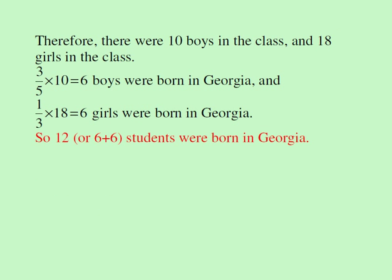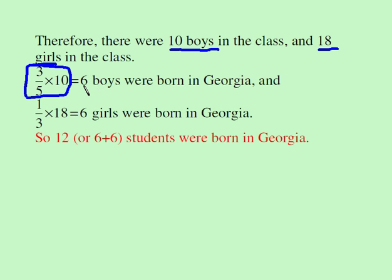The question wants us to find the total number of boys and girls born in Georgia. Since b is ten, there are ten boys in the class, and since there are eight more girls, there are eighteen girls. Three-fifths of the boys is six, and one-third of the girls is also six — which makes sense because they were the same number. So the final answer is twelve: six boys and six girls were born in Georgia.